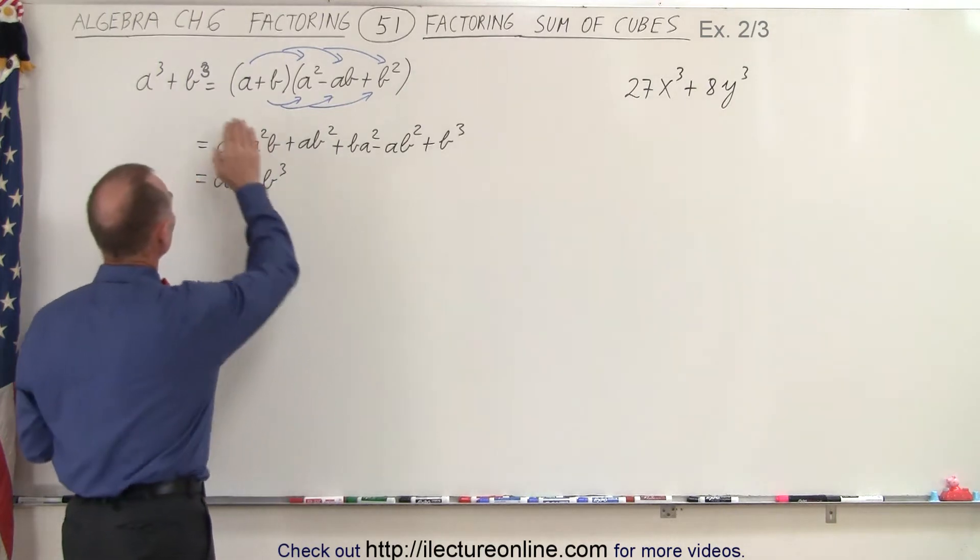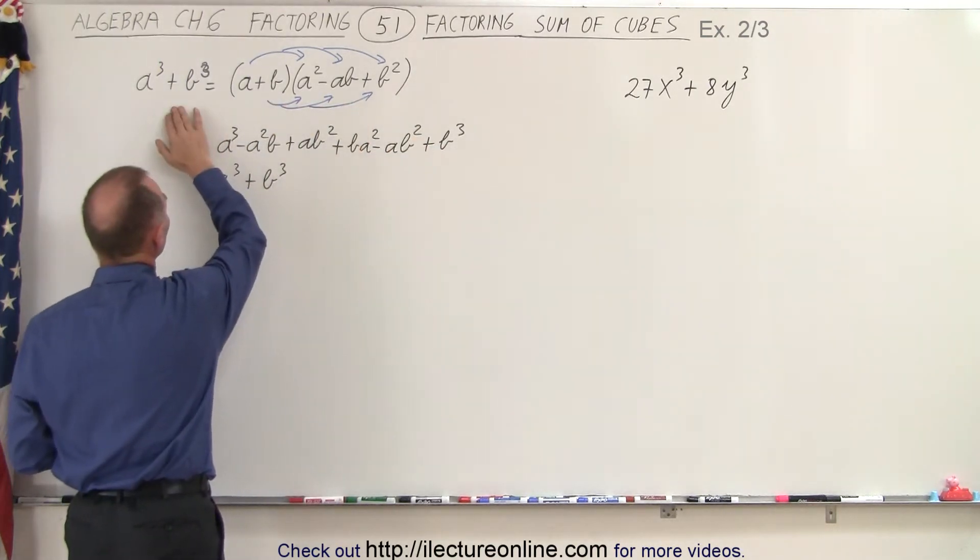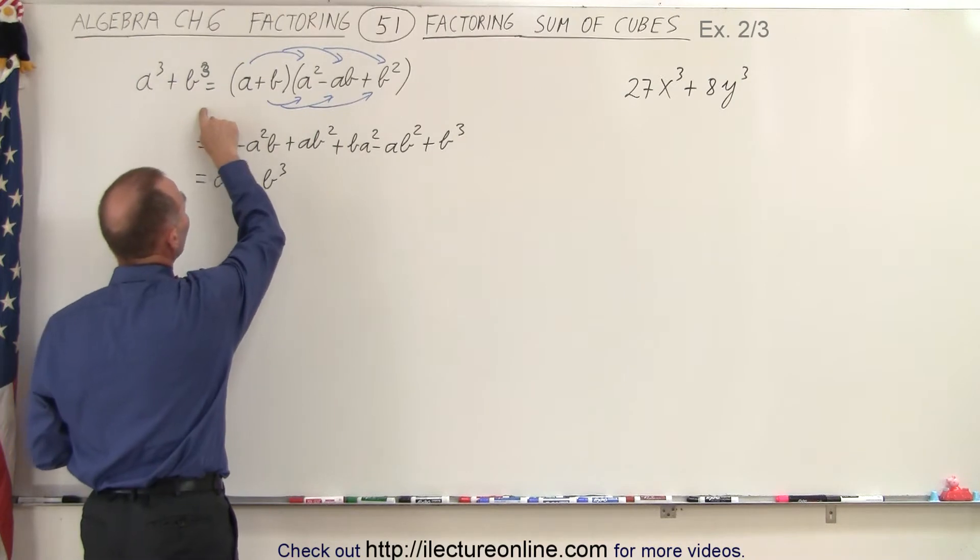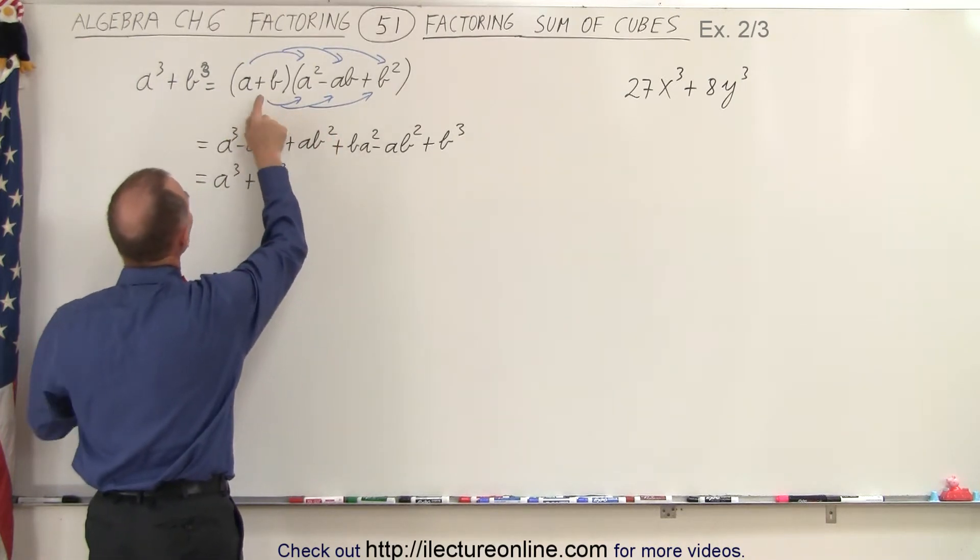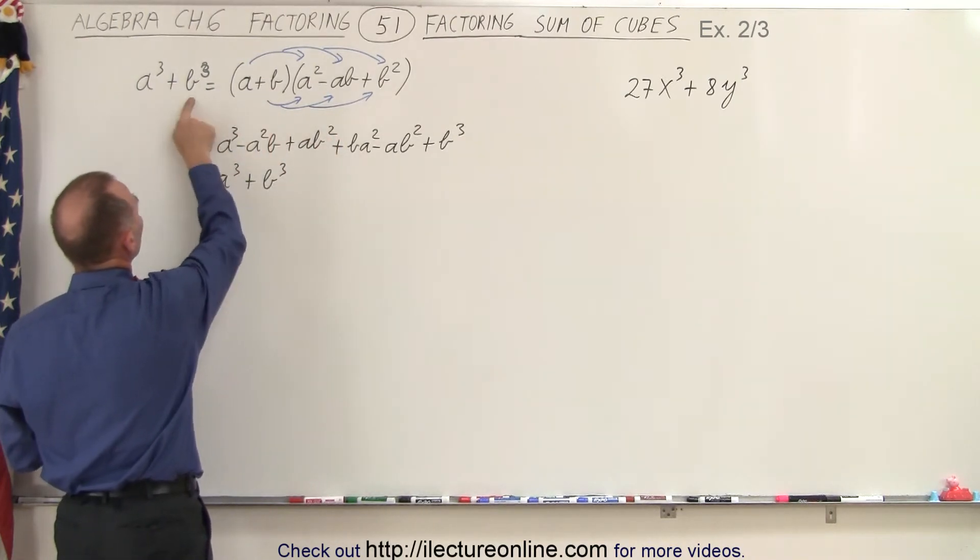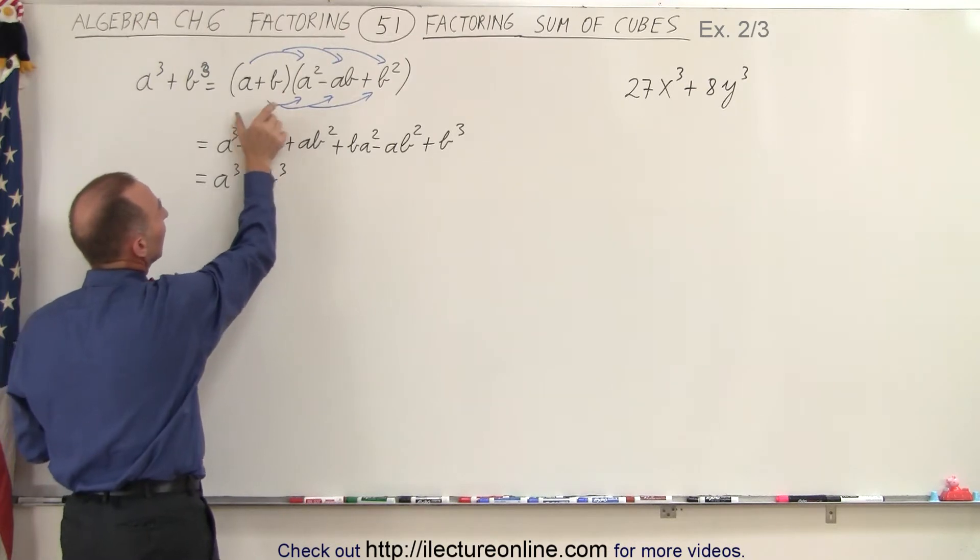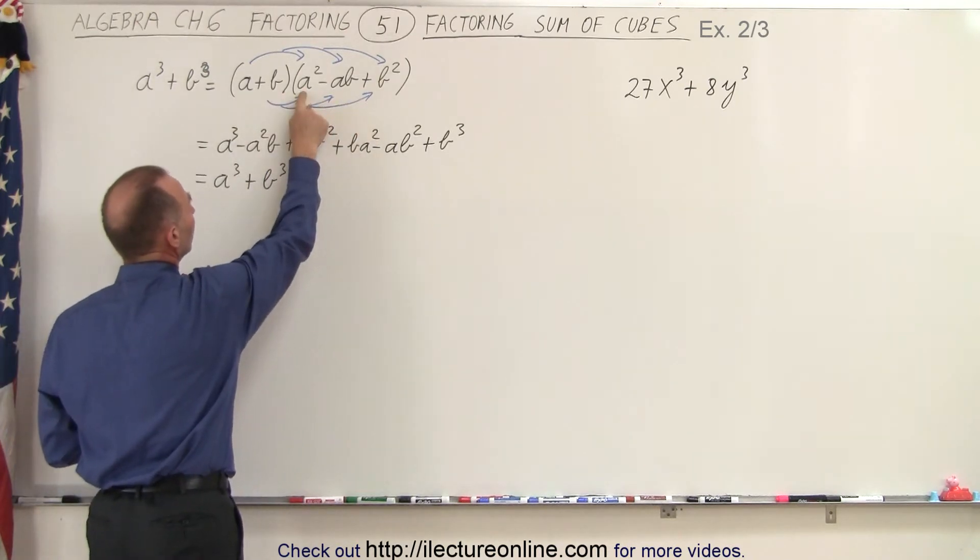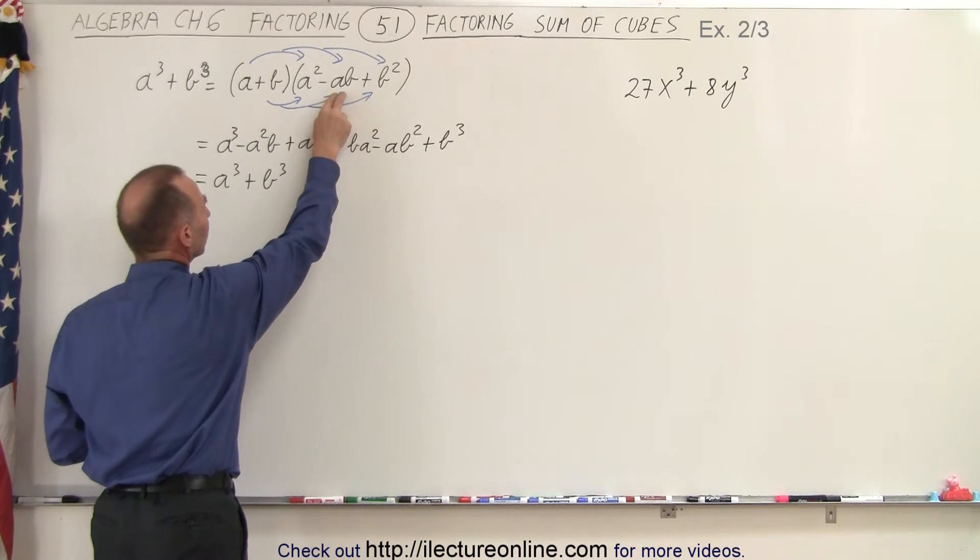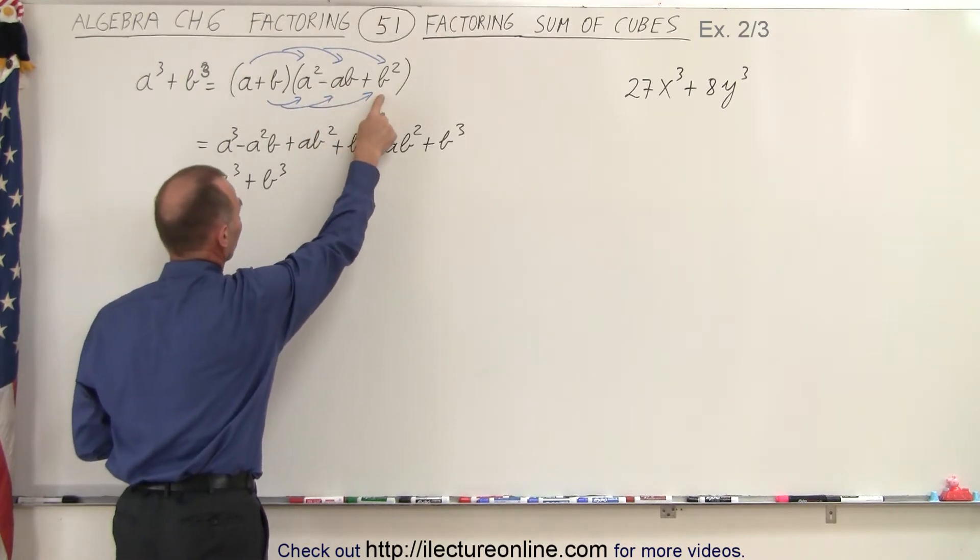Once we realize that it's basically the same thing as this, realizing that we have a cubed plus b cubed factors as a plus b, so we take the first two terms here, we write as a plus b, and then we write it as the first term squared minus the product of the two terms plus the last term squared.